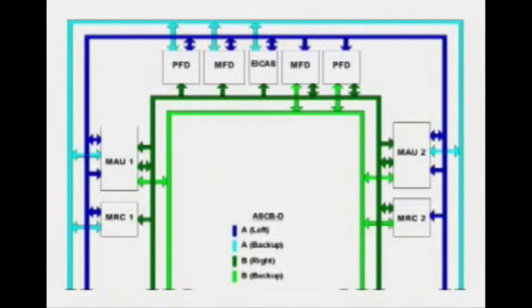ASCB-D allows 15 times more throughput as compared to version C, as used in Primus 2000 systems.